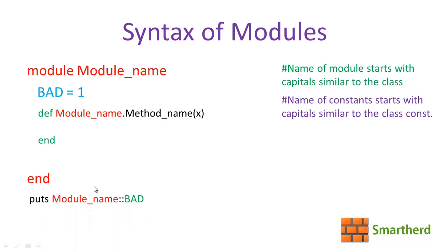Now, this is the syntax for accessing a constant within the module from outside: module name, double colon, then the constant name. For example, this puts statement will print the value 1.